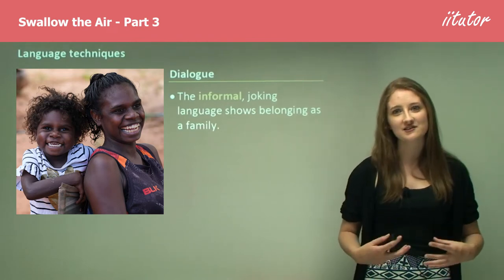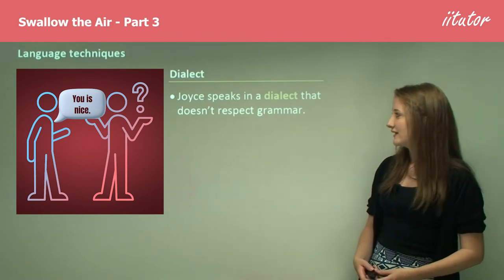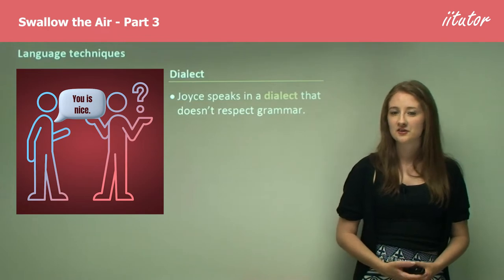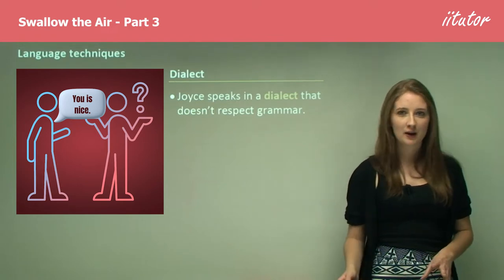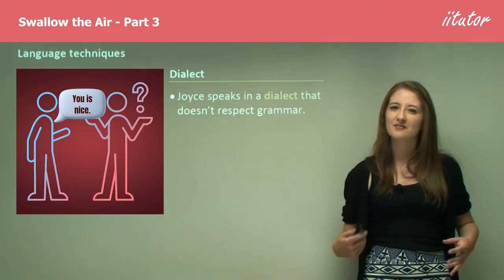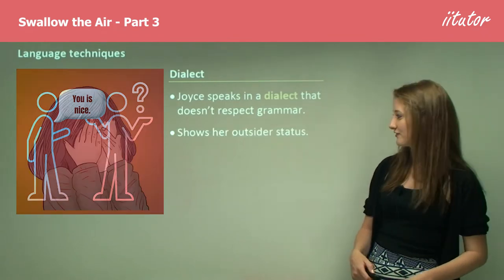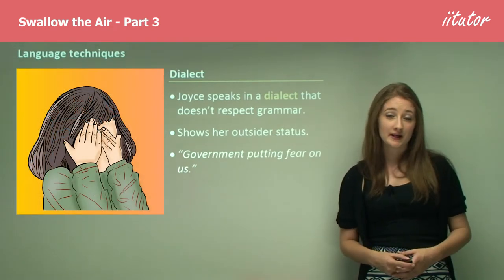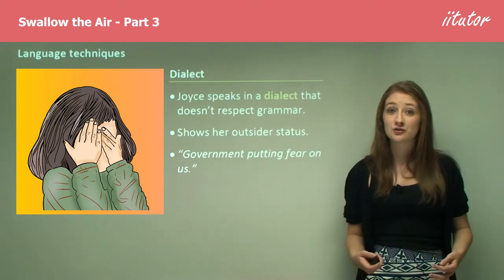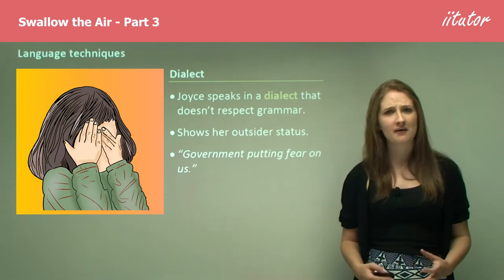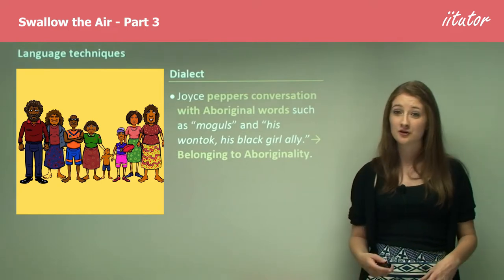Looking at the technique of dialect, Joyce speaks in a dialect that doesn't respect grammar. The author sacrifices correct spelling and grammar in order to more correctly characterise and give colour to her work. This definitely shows Joyce's outsider status through the way that she talks. The quote 'government putting fear on us' is not grammatically correct, but is really successful in expressing Joyce's language and the way she interacts with the people around her. Joyce also peppers her conversation with Aboriginal words and slang.